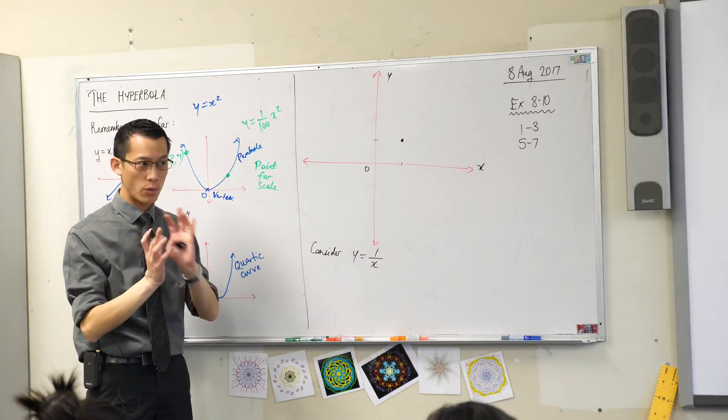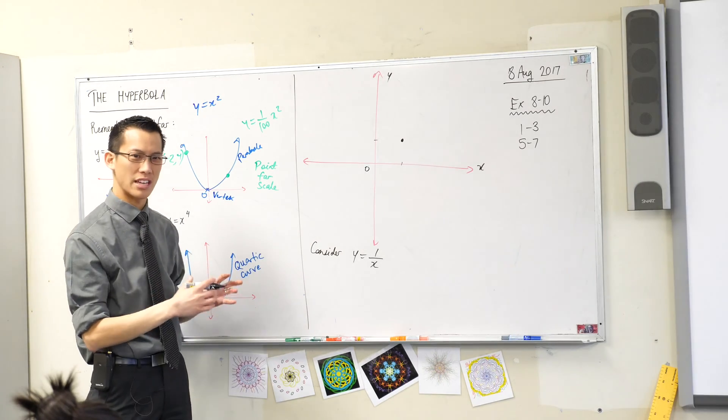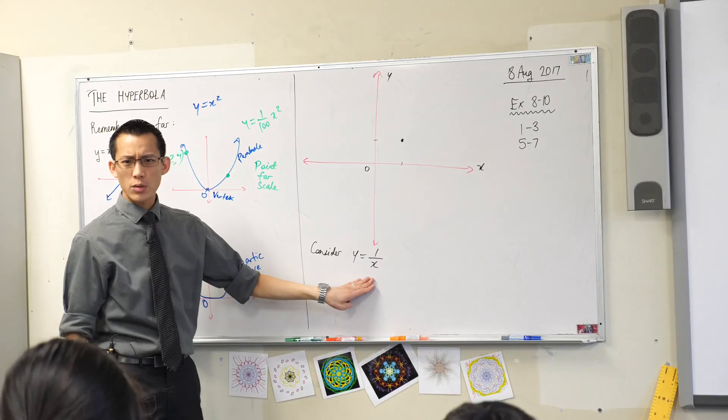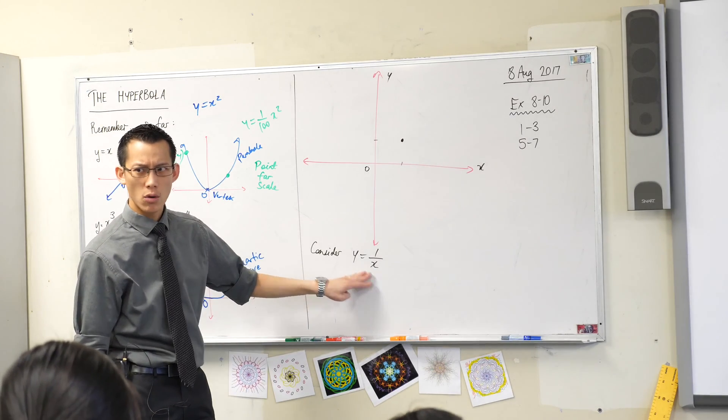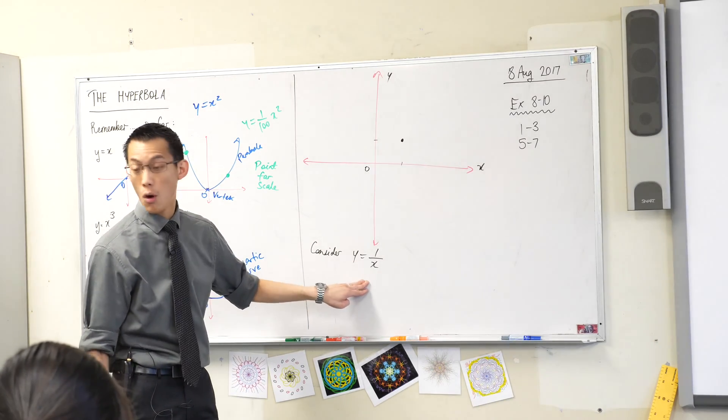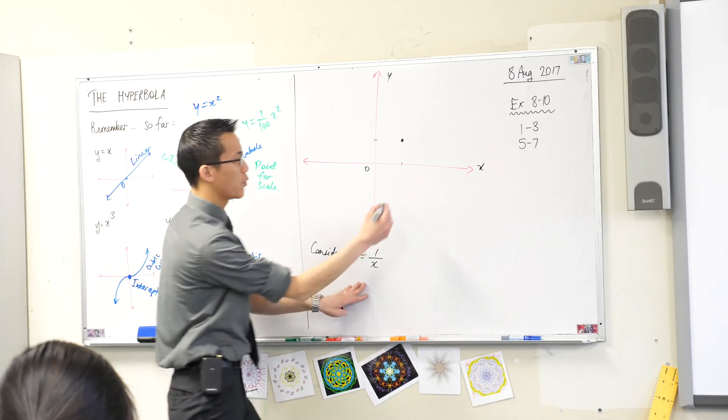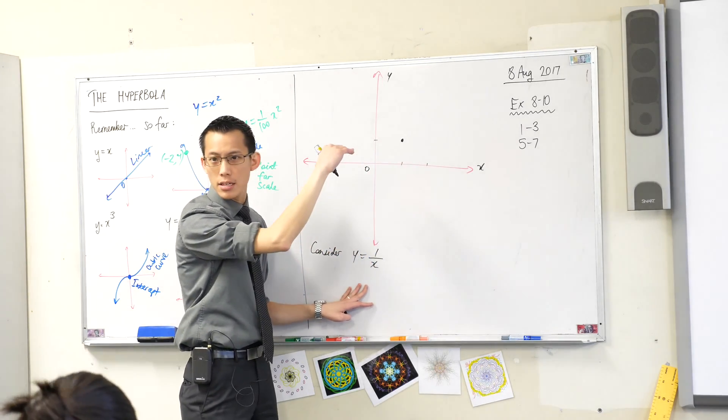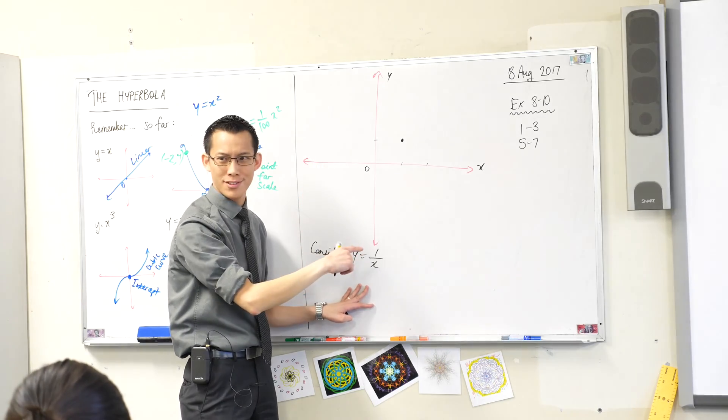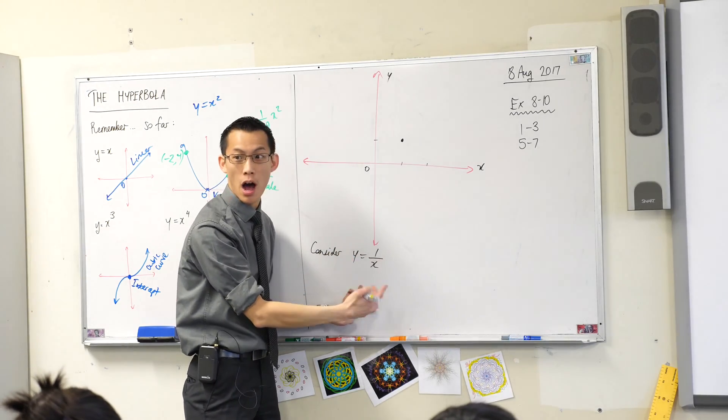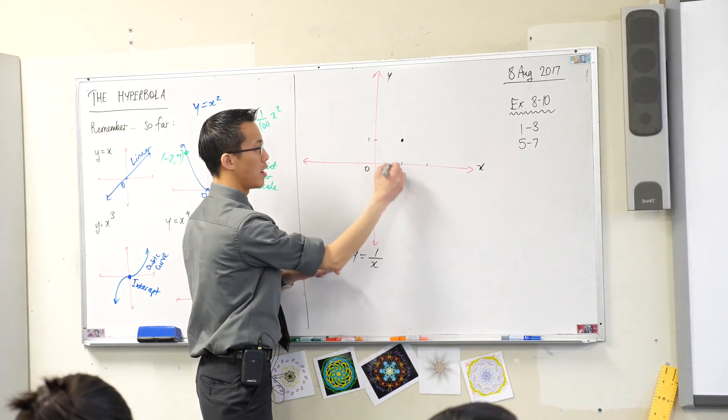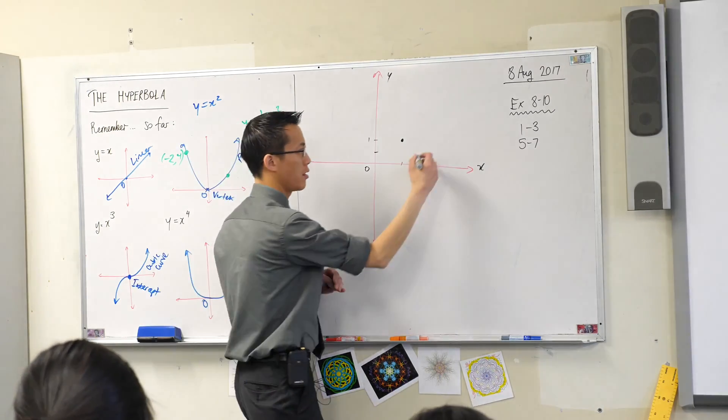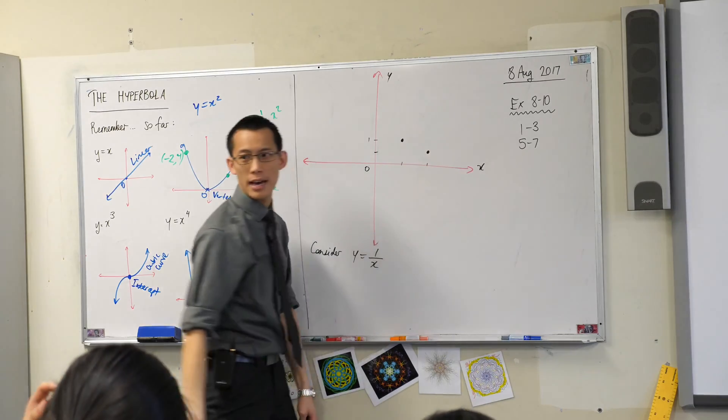Don't worry about labeling it with the coordinates yet because your diagram is going to get super busy in a minute. What about if x was 2? Y would be equal to 1 over 2, which is a half. So when x is 2, y is 1 over 2, which is a half. So here's 1, a half would be there - it's lower.